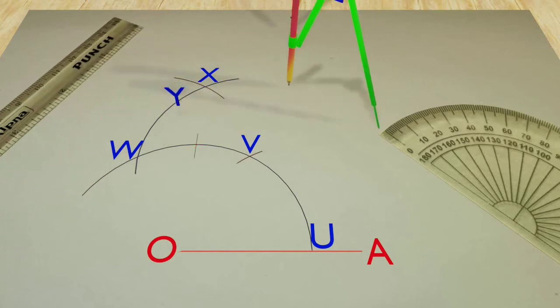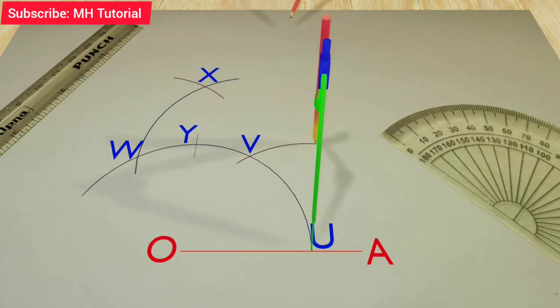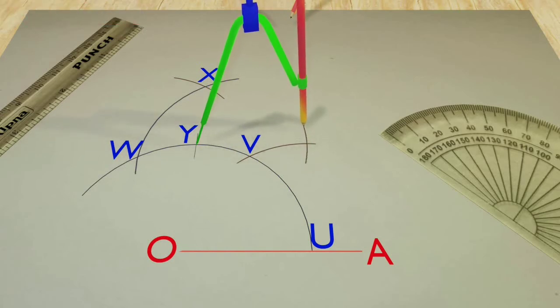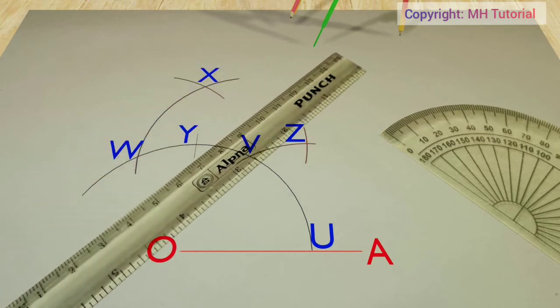The point is named as Y. Then two circle arcs of same radius are drawn from point U and point Y respectively. These two arcs meet at point Z. Finally, with the help of a ruler and a pencil, point Z and point O are connected.